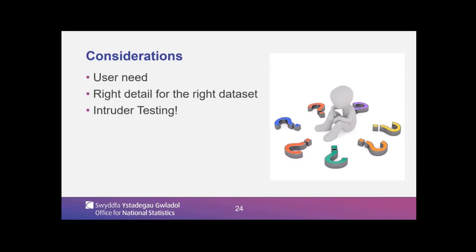Some final considerations: the user need for what we put into each dataset. We've done the stakeholder engagement to determine the right detail for the right dataset, because there's quite a range of datasets and what's appropriate for each varies. We are also going to intruder test the microdata. We will get some people to try and find things out from the data once the dataset is generated. We try as much as possible to do the bare minimum with this data — it's all about choosing the classifications, choosing the variables, getting the geography in place, and then allowing the setting to maintain the safety of the data. That concludes the talk.